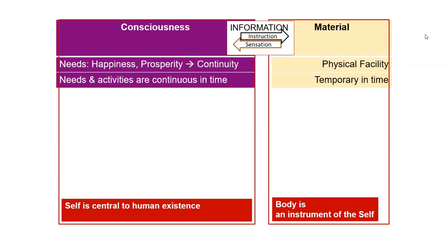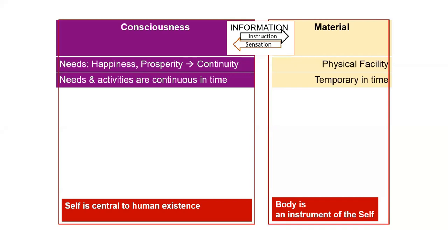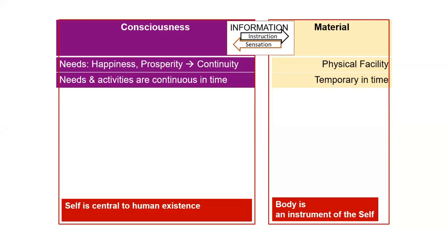There are many sensations taking place in the body, but we are not accessing all these sensations. We only access those sensations which we consider important. This is the transaction going on between the self, which is a unit of consciousness, and the body, which is a unit of material. When we look at the need of human being, it is basically the need of the self playing the central role, and that need is for continuous happiness. And even prosperity — this feeling of prosperity — is the need of the self.